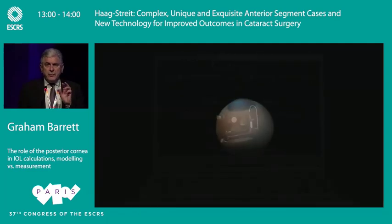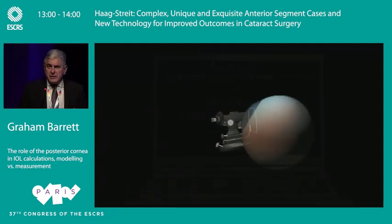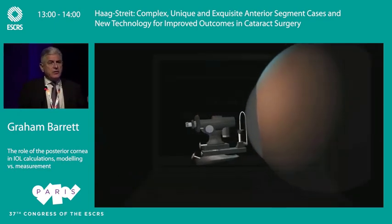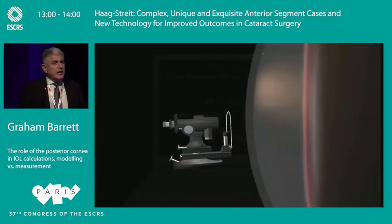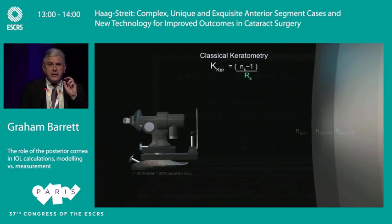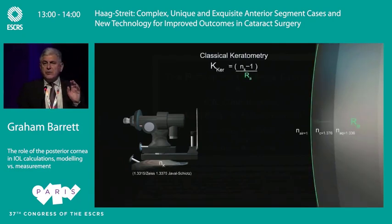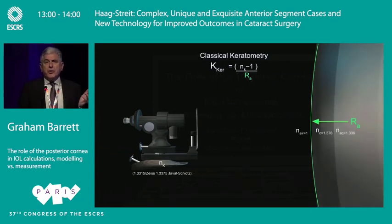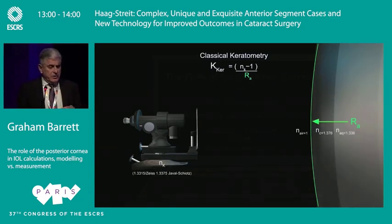The essence is this: ever since Javel introduced his keratometer, when we measure keratometry, we're measuring the anterior surface. And we account for the posterior cornea by basically a fudge factor, which is accounted for by the so-called keratometer index.